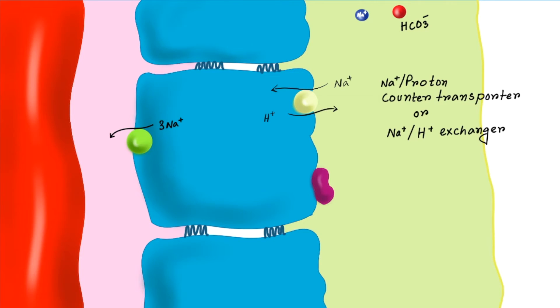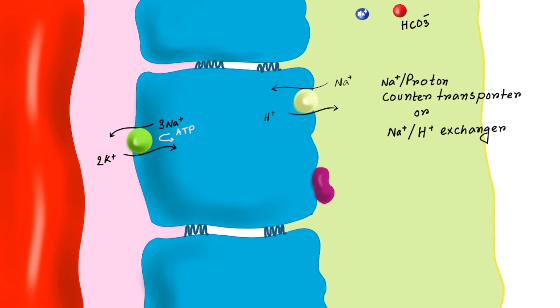There are special transporters on the basolateral side which constantly throw the sodium out of the cells. These transporters on the basolateral side throw 3 sodium out of the cells and 2 potassium into the cells. During this process they use ATP. That's why the transporter is called sodium potassium ATPase. Here one thing you should remember is that not only proximal convoluted tubule cells, these transporters are present on the basolateral side of every nephron cell.